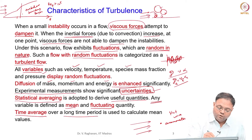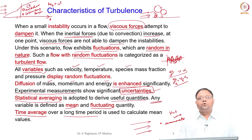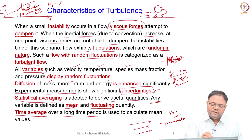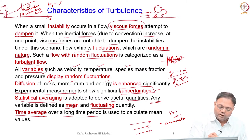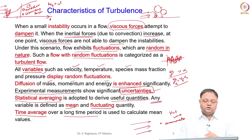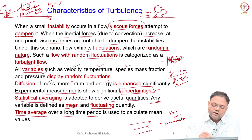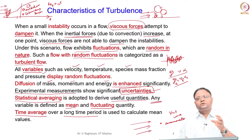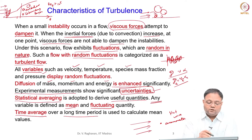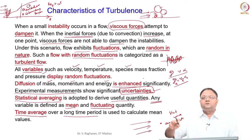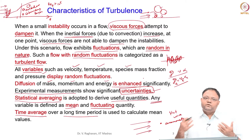In turbulent flow, many eddies of different sizes are present, exchanging energy from the main flow and dissipating it to the lowest time scale. In the laminar region, the velocity profile is very regular and structured. In the turbulent region, the flow field is very oscillatory due to the presence of eddies growing, breaking, and so on, causing chaotic fluctuations of multiple frequencies and amplitudes superimposed on each other.